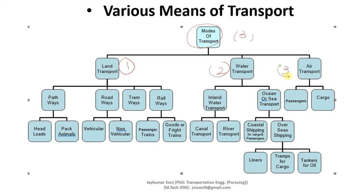Land transport can be divided into 4 categories: pathways, roadways, tramways, and railways. Waterways can be divided into 2 categories: inland waterways and ocean waterways. Air transport can also be divided into 2 categories: passenger transport and cargo transport.